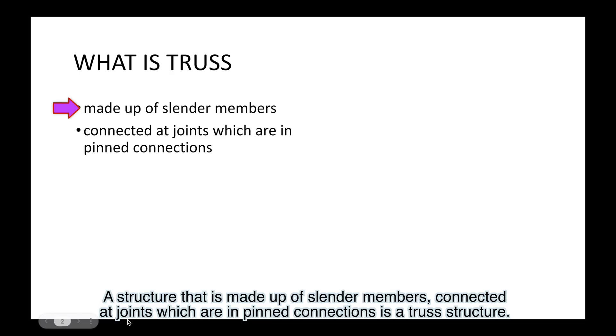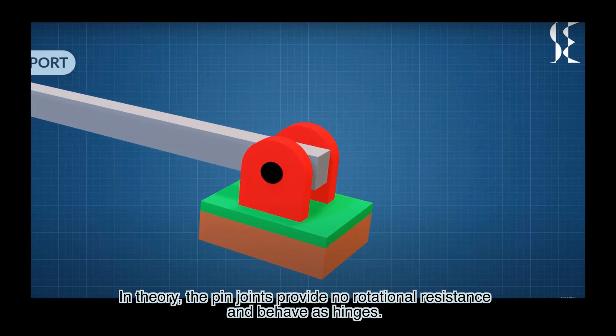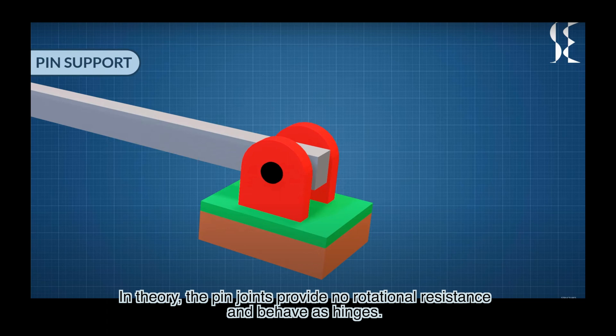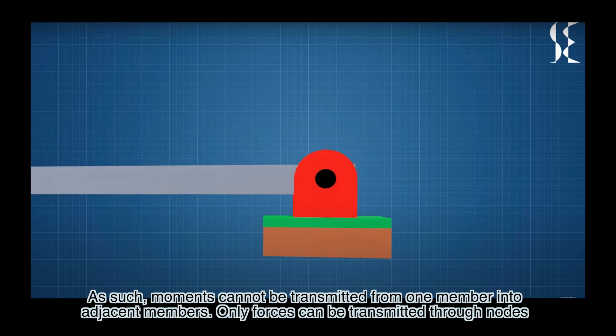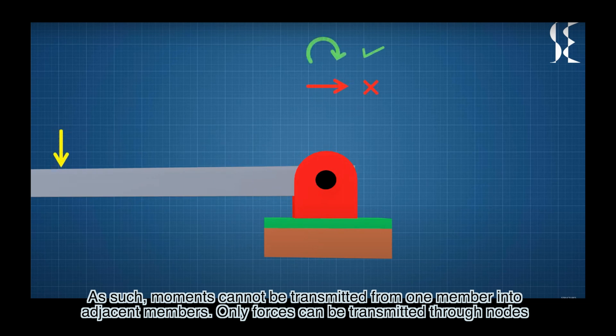A structure that is made up of slender members connected at joints which are pinned connections is a truss structure. In theory, the pin joints provide no rotational resistance and behave as hinges. As such, moments cannot be transmitted from one member into adjacent members. Only forces can be transmitted through nodes.